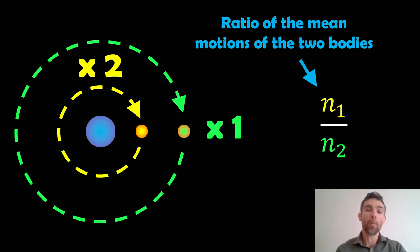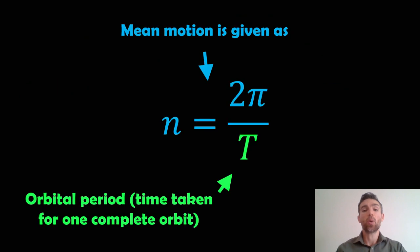Now n is the mean motion. What's the mean motion? The mean motion is given by this expression: it's just 2π over T, where T is the orbital period, how long it actually takes to go around. If you put those in the previous equation, you can work out what the actual mean motion resonance would be.